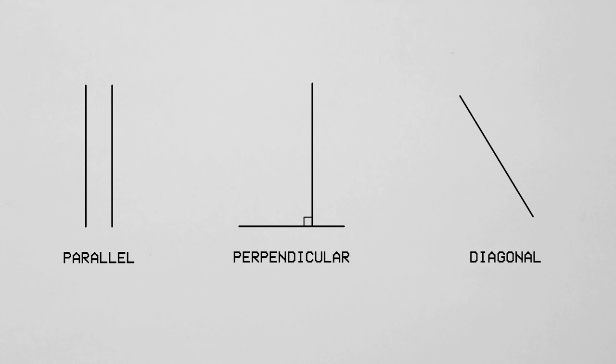Perpendicular: these are lines which meet at right angles. Diagonal: a diagonal is a line which connects two vertices when they are not on the same edge. The term is also commonly used to describe any line that has a slant.